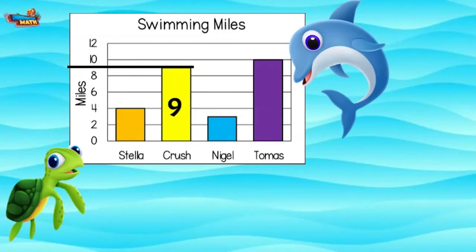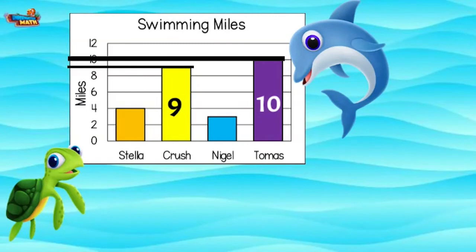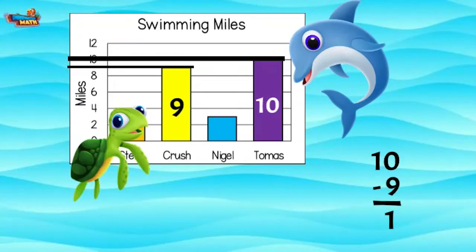I swam 10 miles because my bar lines up with 10. That's right, but you want to know how many miles you swam compared to Crush. To figure this out, we need to subtract the two numbers because we want to find the difference. I swam one more mile than Crush.